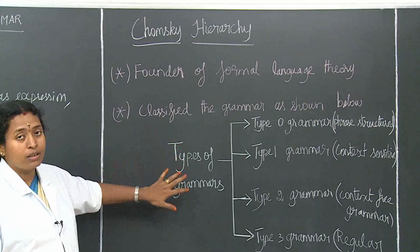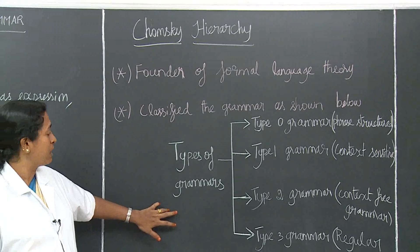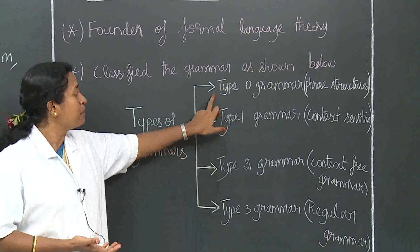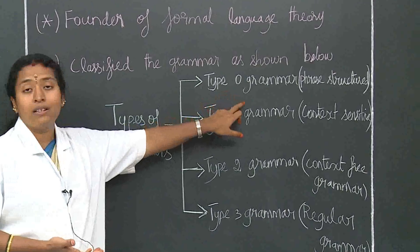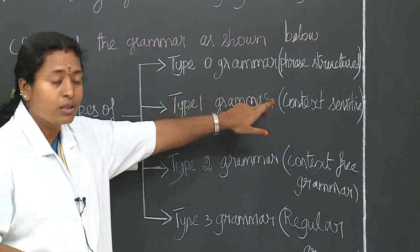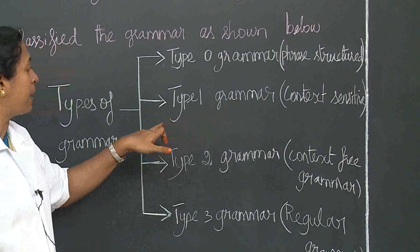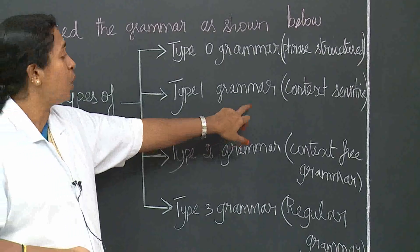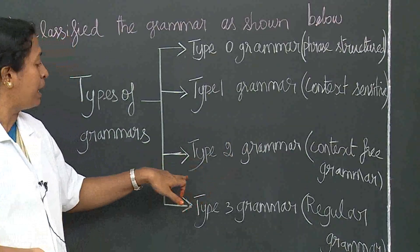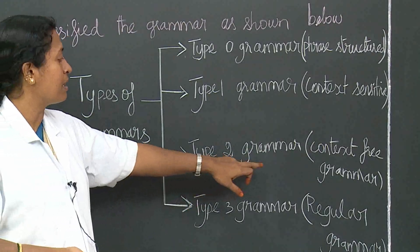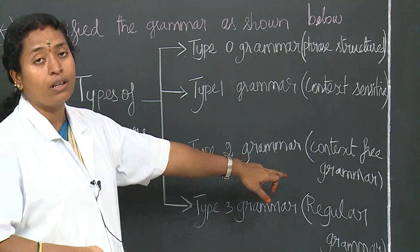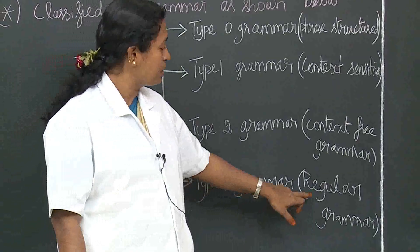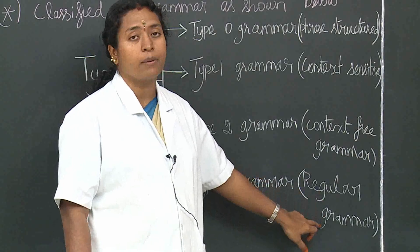Now, what are the types of grammars? The types of grammars are four types. Type 0 grammar is otherwise known as phrase structured grammar. Type 1 grammar is otherwise known as context sensitive grammar. Type 2 grammar is otherwise known as context free grammar. Type 3 grammar is otherwise known as regular grammar.